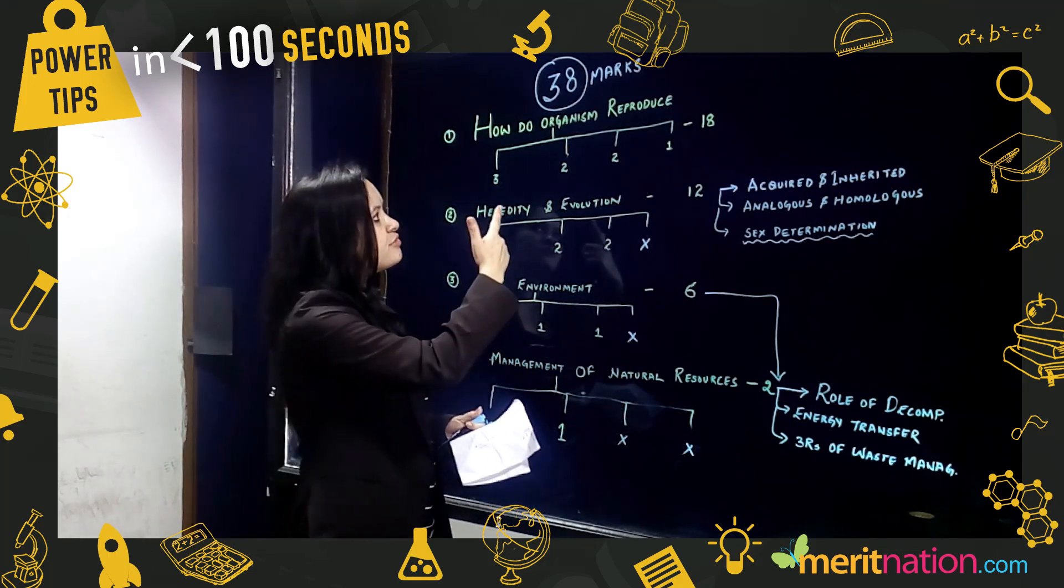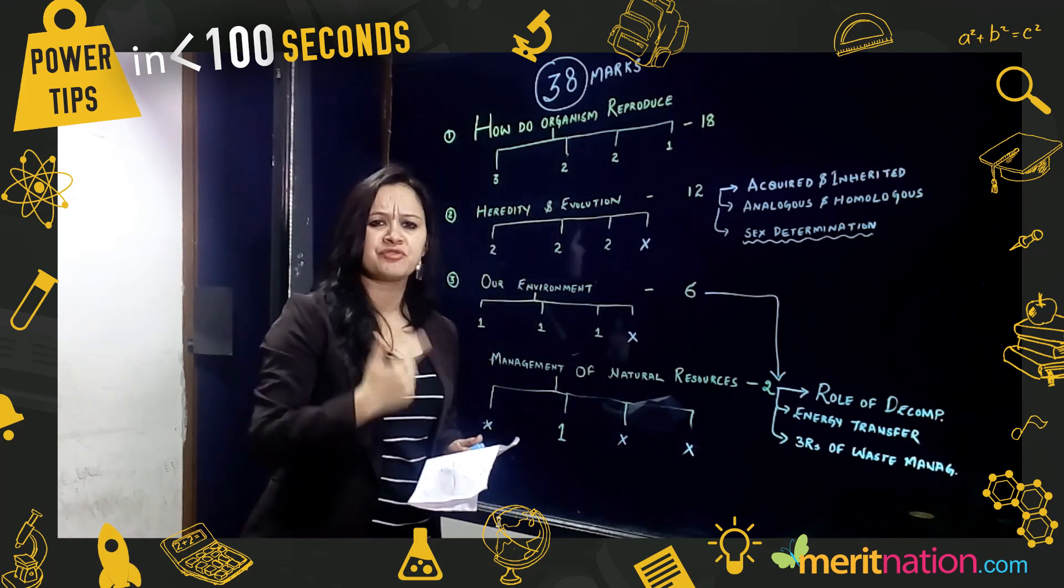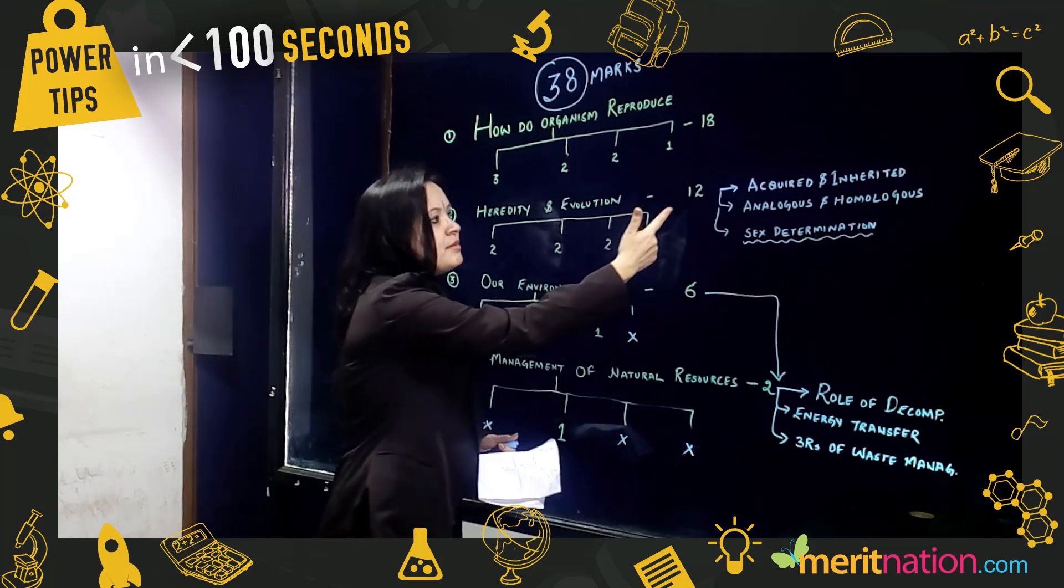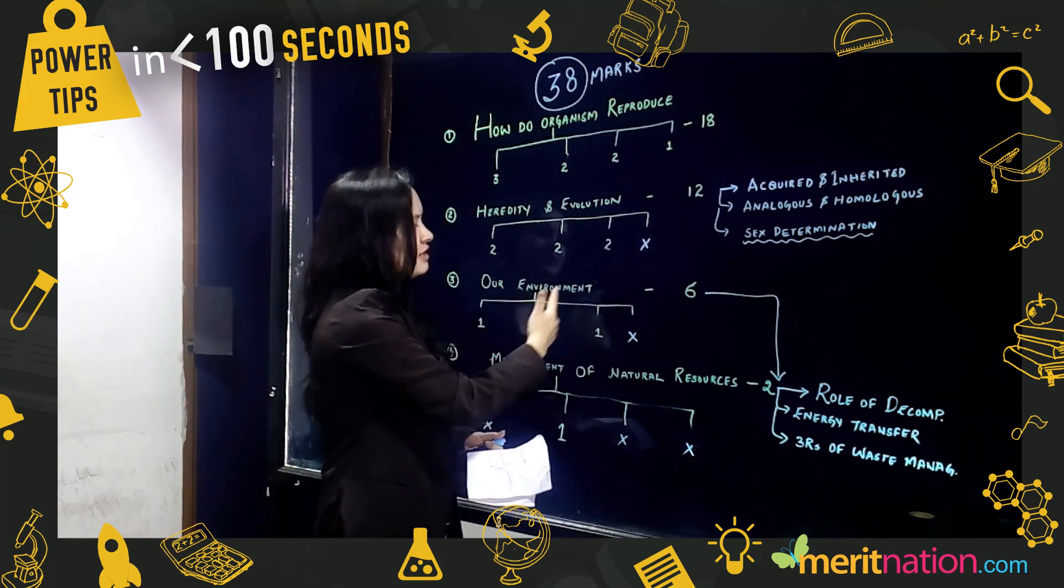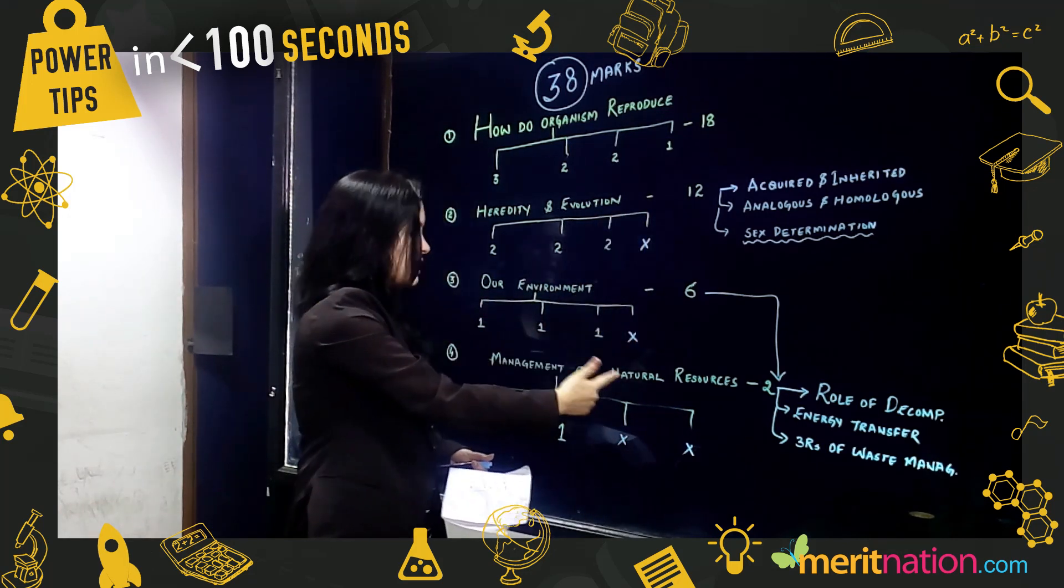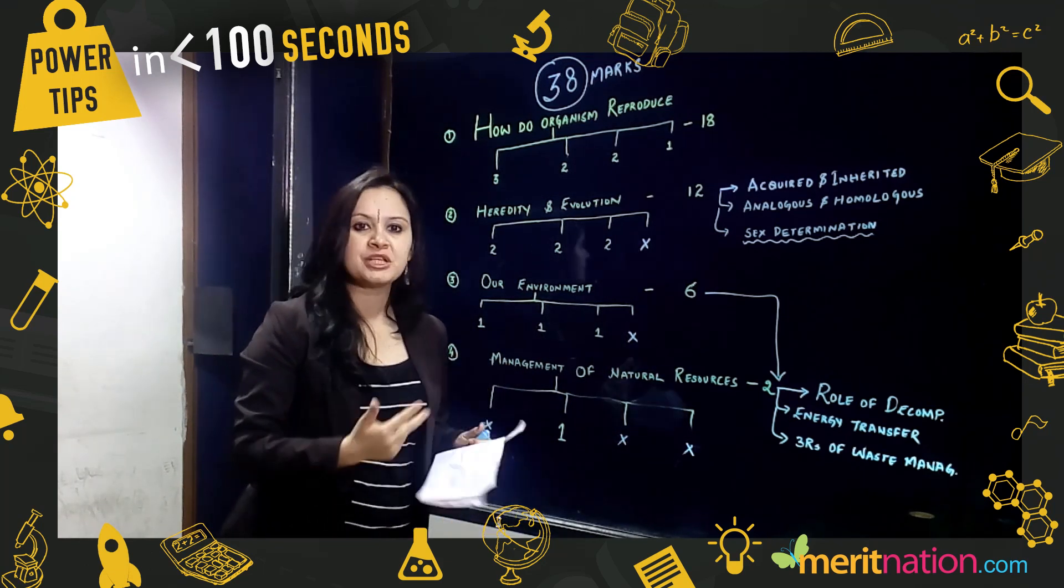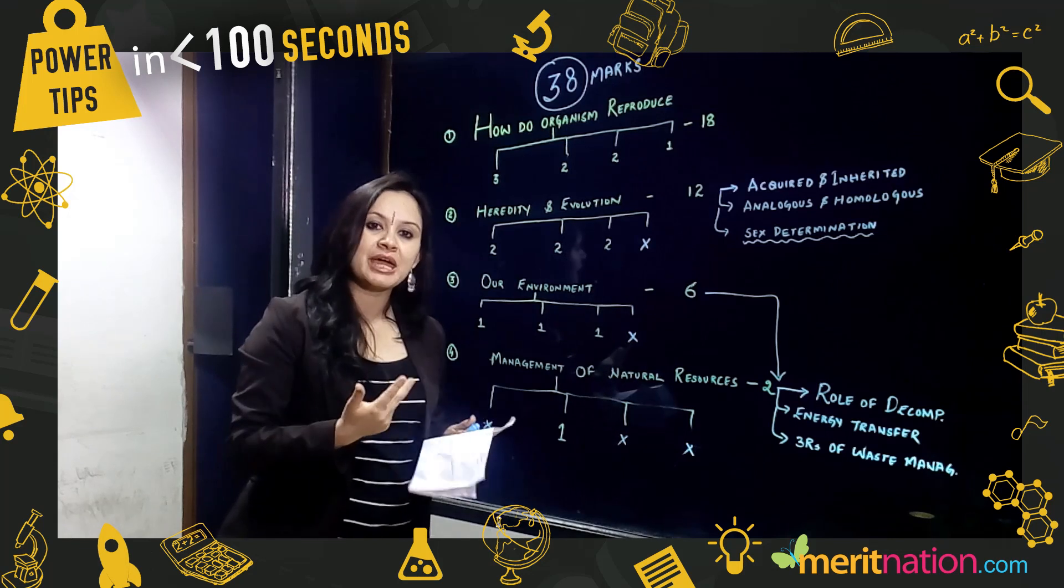How Do Organisms Reproduce carries 18 marks and is one of the really easy and scoring chapters. Heredity and Evolution carries a maximum weightage of 12 marks, Our Environment carries 6 marks, and Management of Natural Resources carries 2 marks. Now moving on to the important topics in How Do Organisms Reproduce: